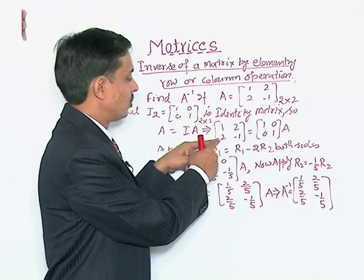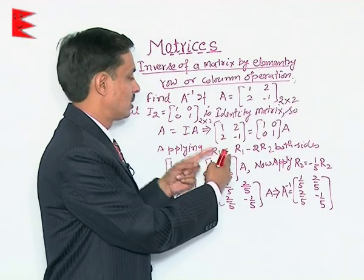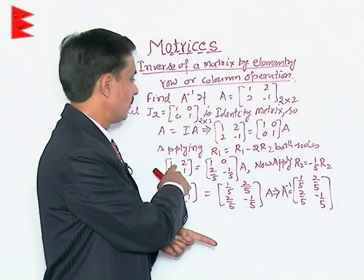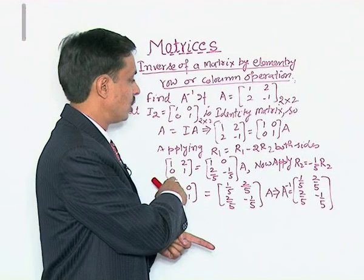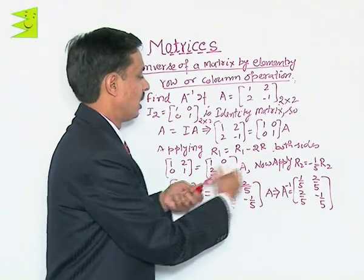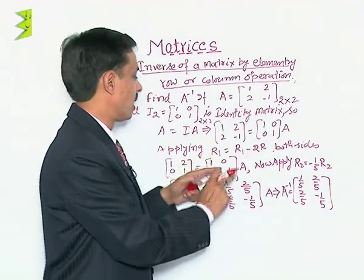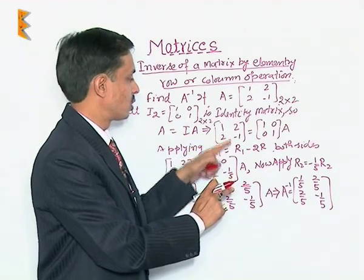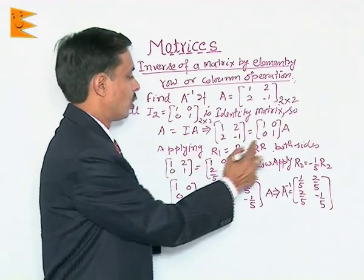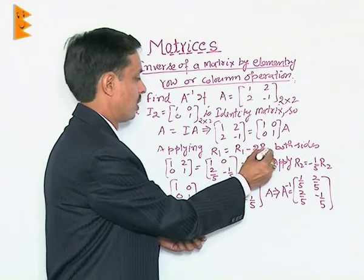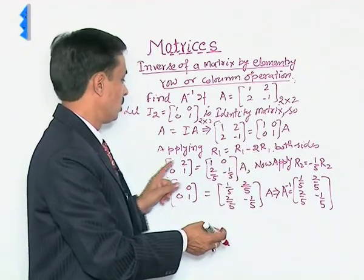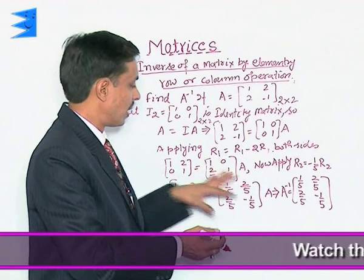So, this will give us that result 1 then 2 then 0 and what we will get is R1. We are operating R1 equals R1 minus twice of R2. So, we will get [[1, 2], [0, 1]].